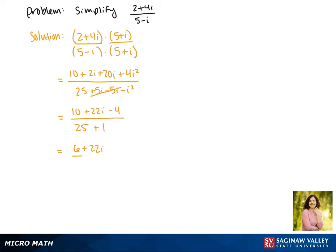Now in the numerator we have 6 plus 22i, and this is divided by 26. We can break this up into their own fractions, so we get 6 over 26 plus 22 over 26 times i.